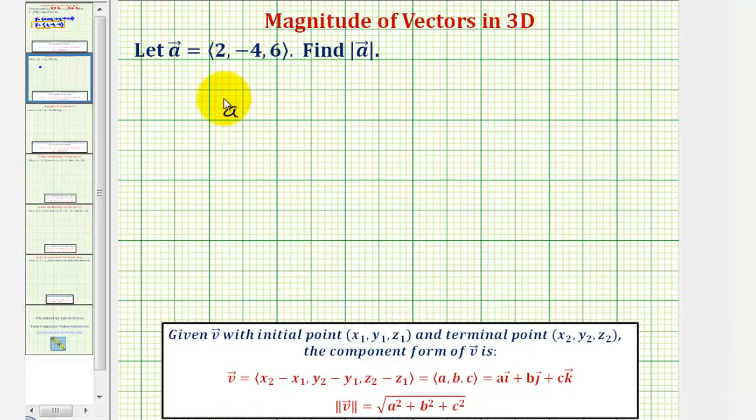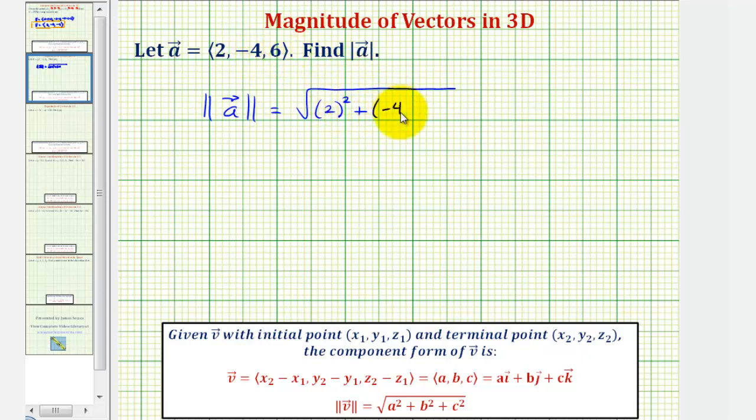So the magnitude of vector a will be equal to the square root of 2 squared plus negative 4 squared plus 6 squared.